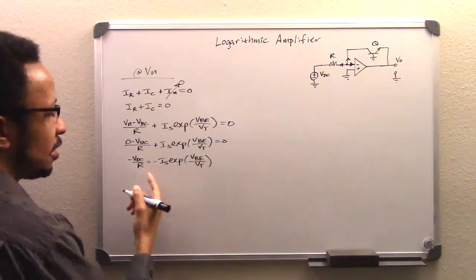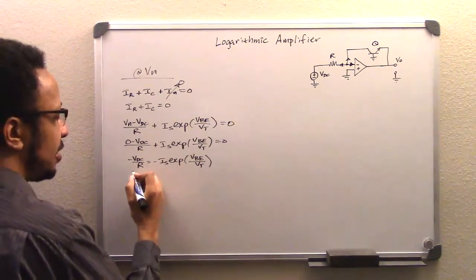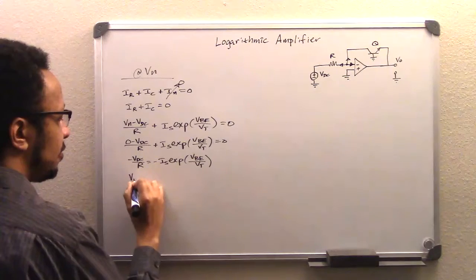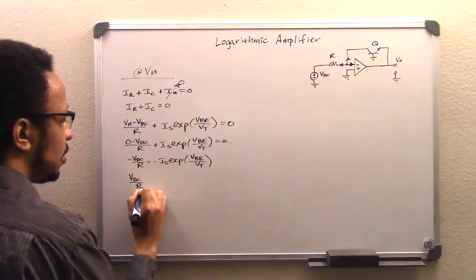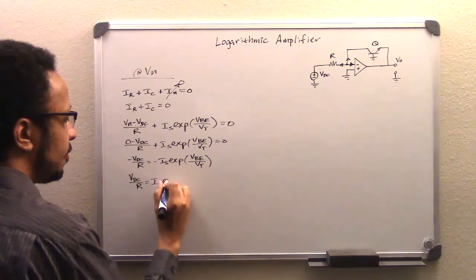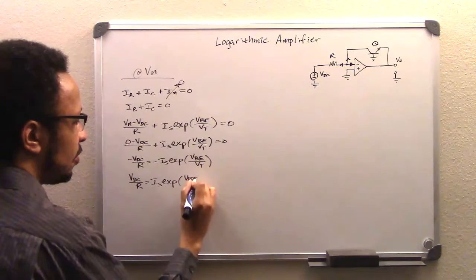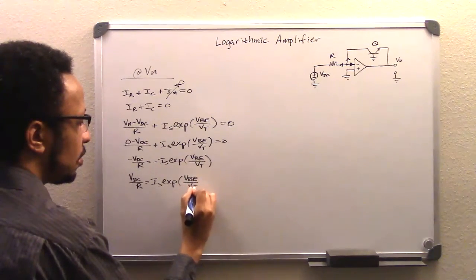that'll be negative VDC over R equals negative IS exp VBE over VT. And of course, you're going to divide that out and that's going to neutralize and make both sides positive. So you're going to have then VDC over R equals IS exponential VBE over VT.